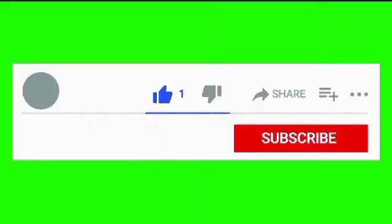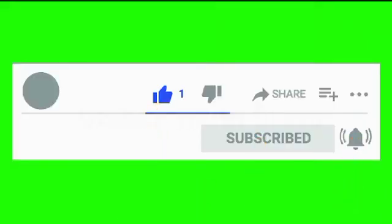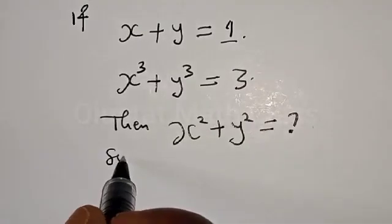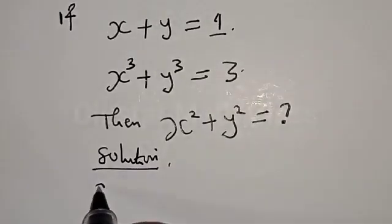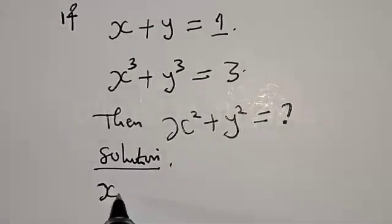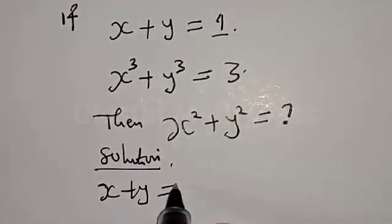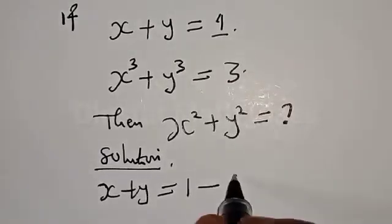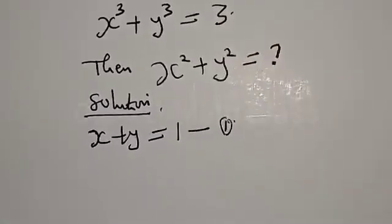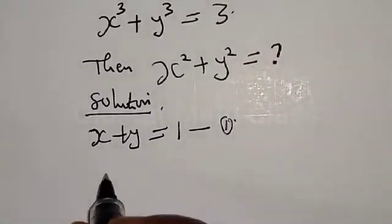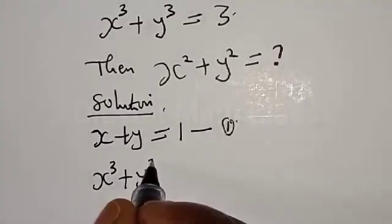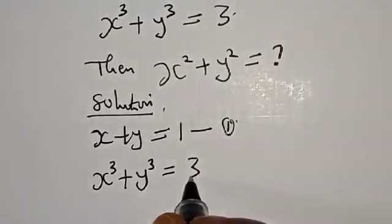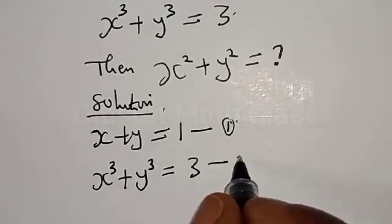Before we proceed, please don't forget to like, share, comment, and subscribe. Thank you. Solution: we have s plus y equal to 1 — let's call this equation 1. Then s cubed plus y cubed equal to 3 — this is equation 2.